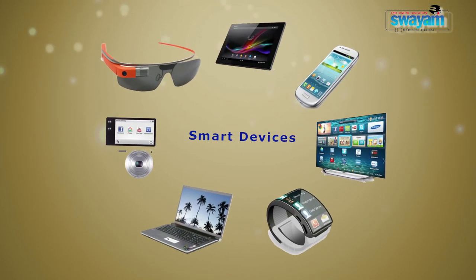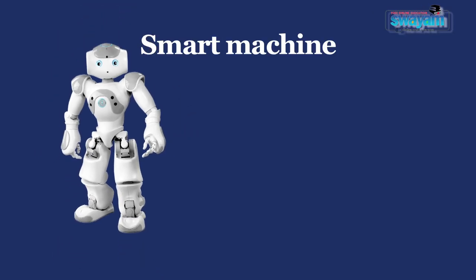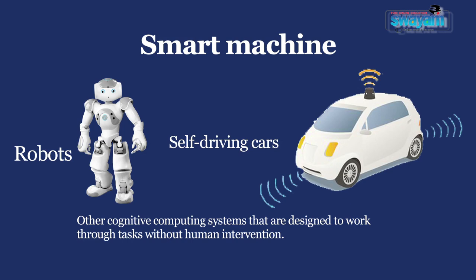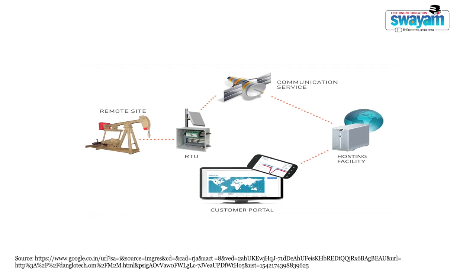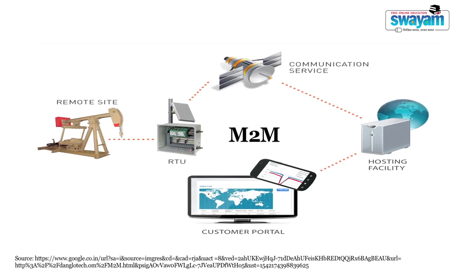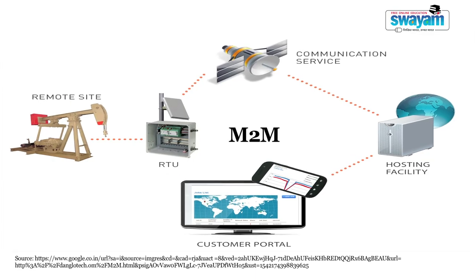Smart machines include robots, self-driving cars, and other cognitive computing systems that are designed to work through tasks without any human intervention. A smart machine is a device embedded with machine-to-machine (M2M) and/or cognitive computing technologies such as artificial intelligence, machine learning, or deep learning — all of which it uses to reason, solve problems, make decisions, and ultimately take action.